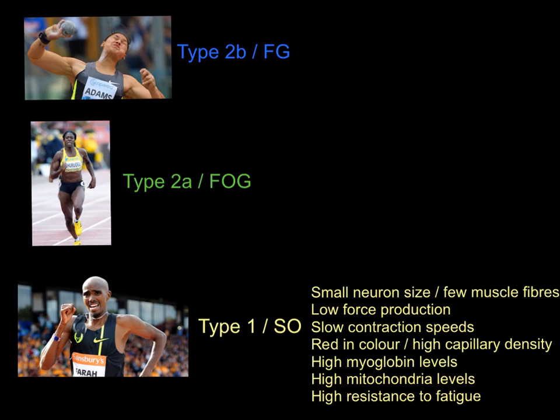Mitochondria are the power stations of cells — tiny structures that help us produce lots of energy aerobically. There are probably millions of mitochondria in your slow twitch muscle fibers. As a result, they are very resistant to fatigue. Yes, they may have low force production and slow contraction speeds, but they can work for very long periods of time, making them ideally suited to endurance events like marathons, Tour de France, and triathlons.